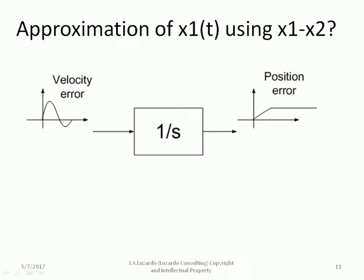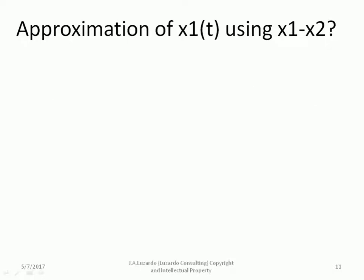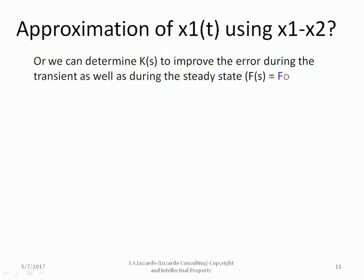Additional to the steady state error, there will be always a transient velocity error that would be integrated by the second integrator. For instance, if the transient velocity error is more positive than negative, the integration of this error will create a positive offset in the position error even though the velocity steady state error is zero. In other words, there is an error inherent to the dynamics of the system using the accelerometer this way to measure position. We can determine K to improve the error during the transient as well as during the steady state.